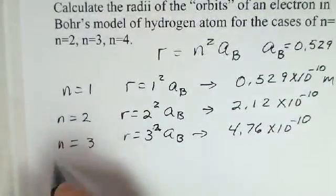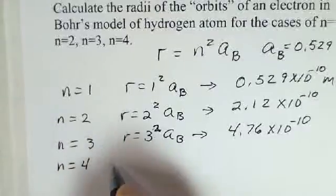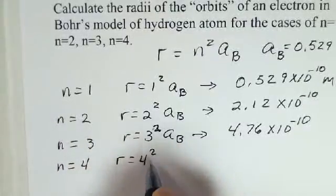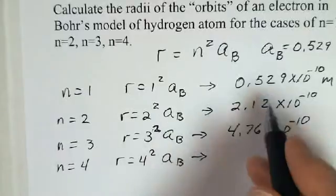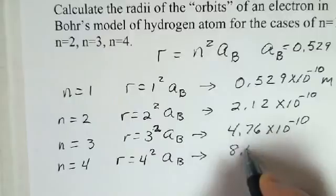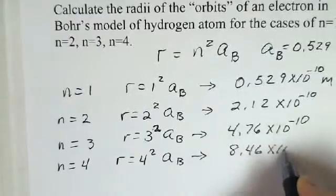What about n equals 4? 4 squared times the Bohr radius. So I get 16 times this number, and 8.46 times 10 to the minus 10.